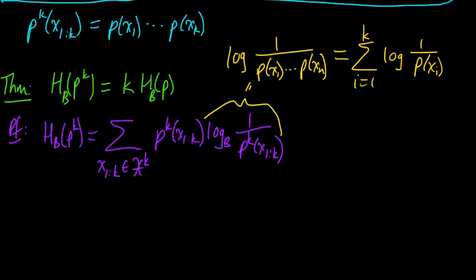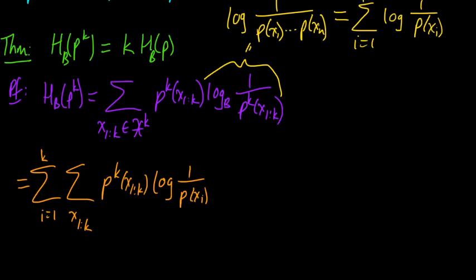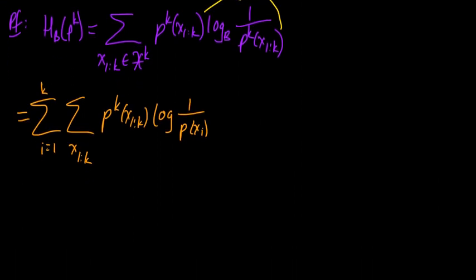And now let's plug this in here. Let's go ahead and move this sum out. So we're going to have a sum here, let's move that sum all the way out to the outside. So we'll have p to the k of x1 to k, log one over p of xi.